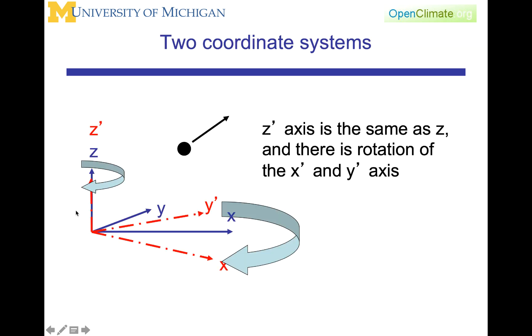We are going to set up a coordinate system that looks like this, where in the darker blue color we have our initial coordinate system, x, y, and z, with z being the local vertical. And we are going to assume rotation around the same axis, such that z prime is the same axis as z, and there is a rotation of the x prime and the y prime axis.